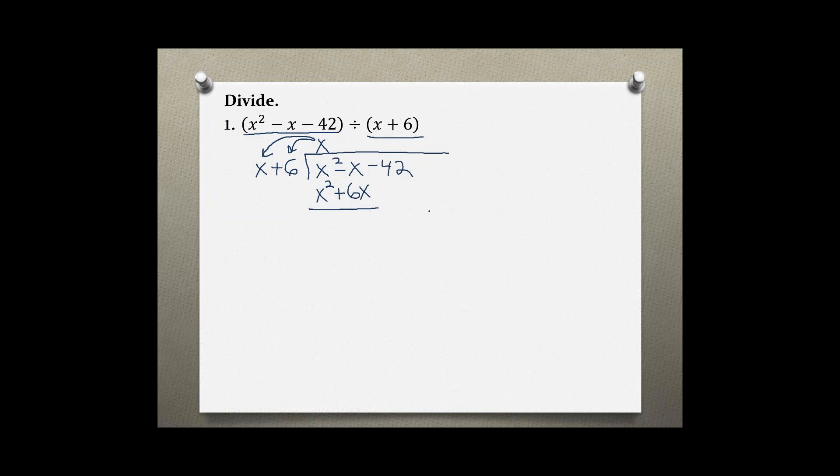Now, the same like in a regular division problem where you're only dividing numbers, you would have to subtract. But in this case, because we have two terms, before we can subtract, we're going to have to distribute the subtraction sign or negative sign into the parentheses, which will change the signs of both terms. So a negative times a positive x squared gives this a negative. And a negative times a positive 6x makes this a negative now.